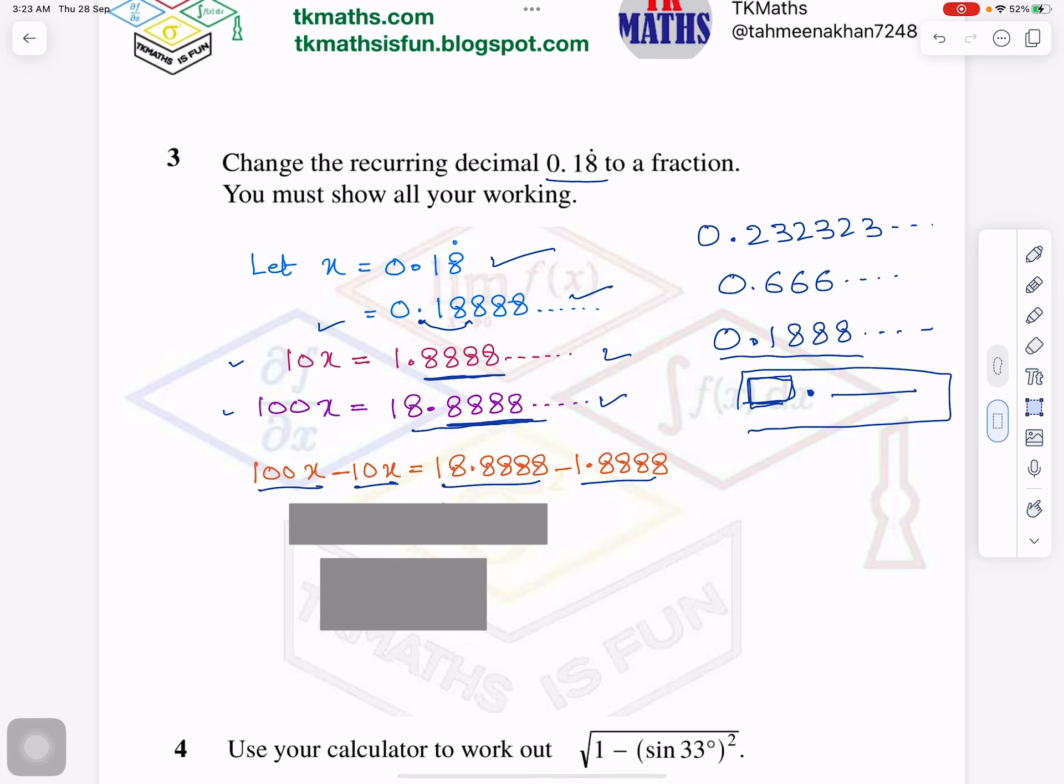And when I will subtract these two, what will happen? 18 minus 1 will be 17. And the digits after decimal will all subtract. So what it will become now? 90x equals 17. And then after algebra, cross multiplication, you know x is equals to 17 divided by 90. So this is how you change your recurring decimals into fractions.